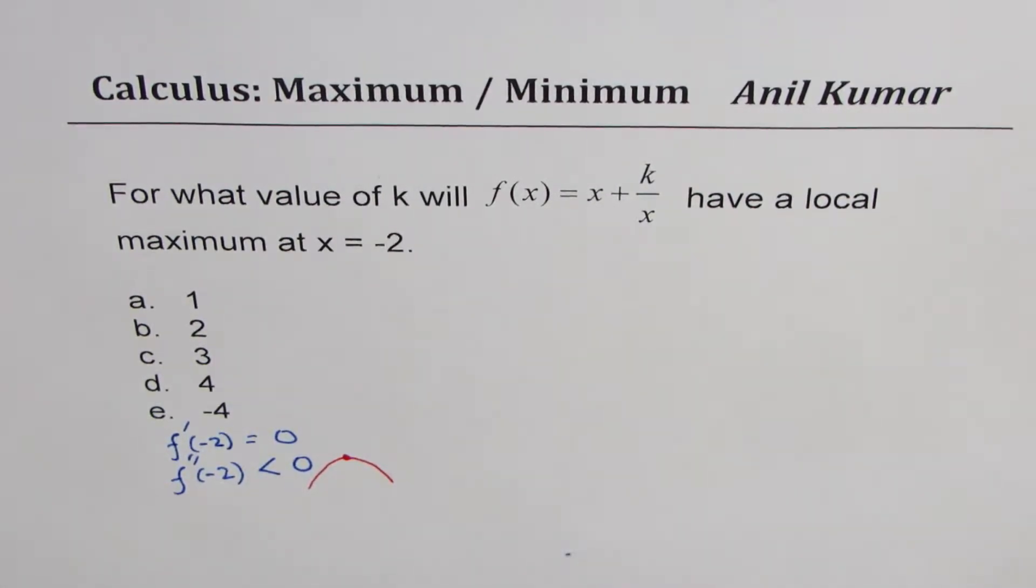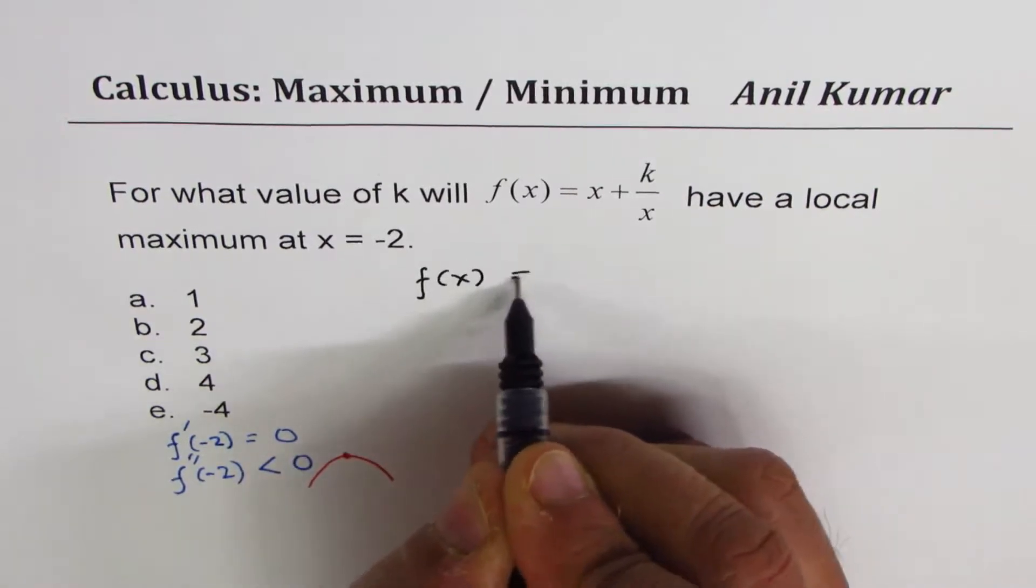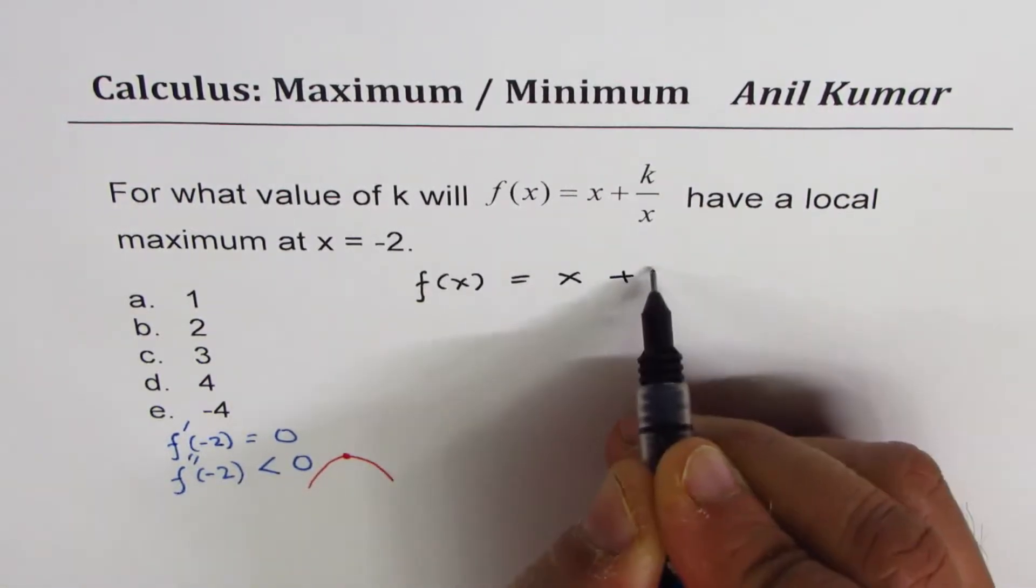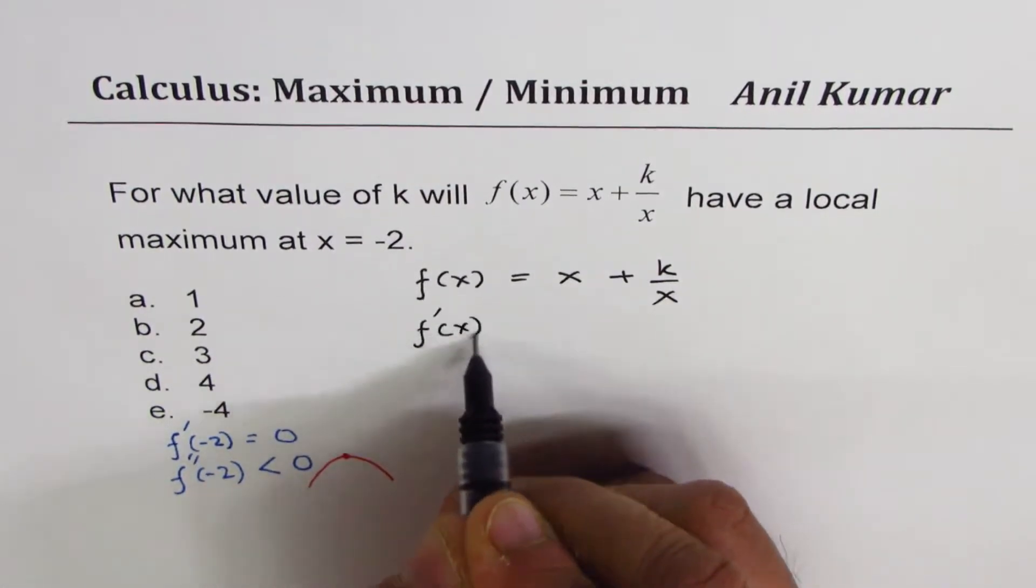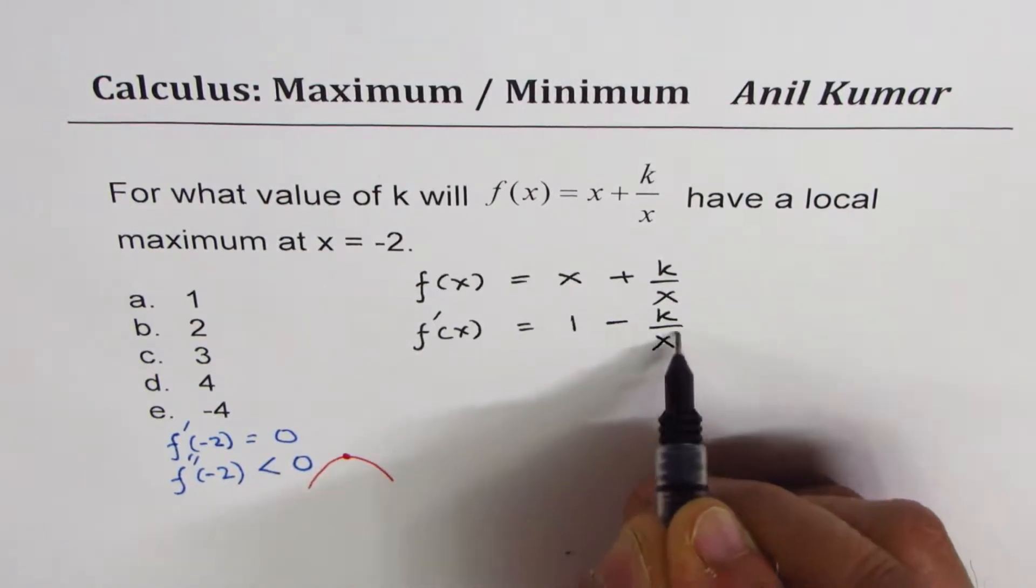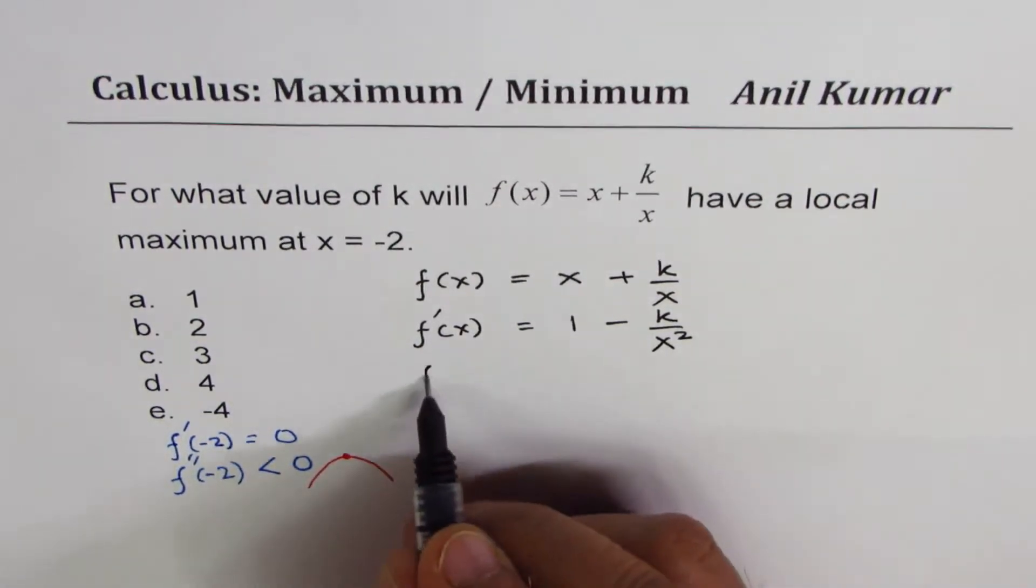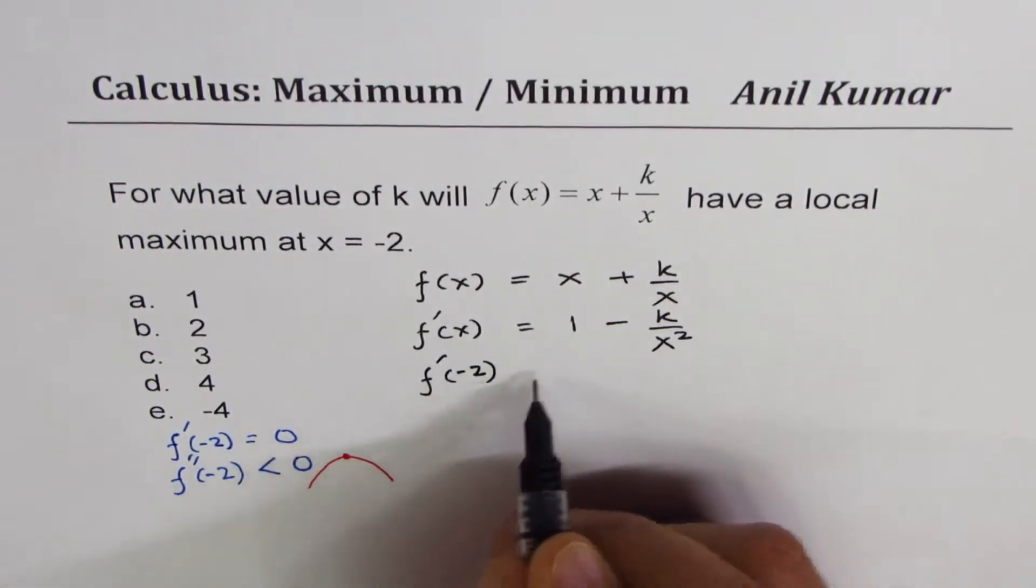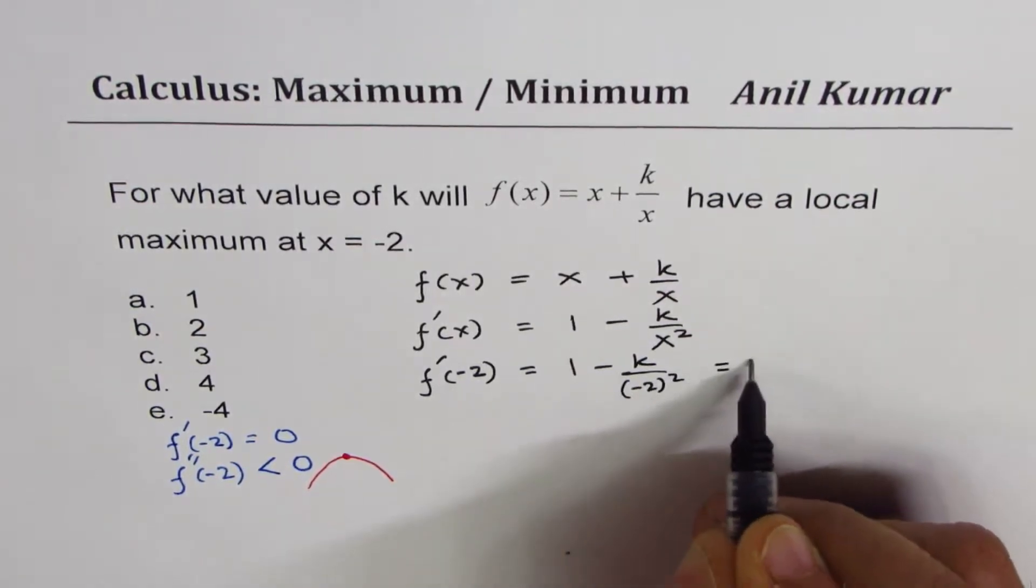So let us find the derivative of the function. The function given to us is f(x) = x + k/x. Derivative of the function will be 1 - k/x². The derivative at -2 has to be 0. That means f'(-2) should be equal to 1 - k/(-2)² and that should be equal to 0.